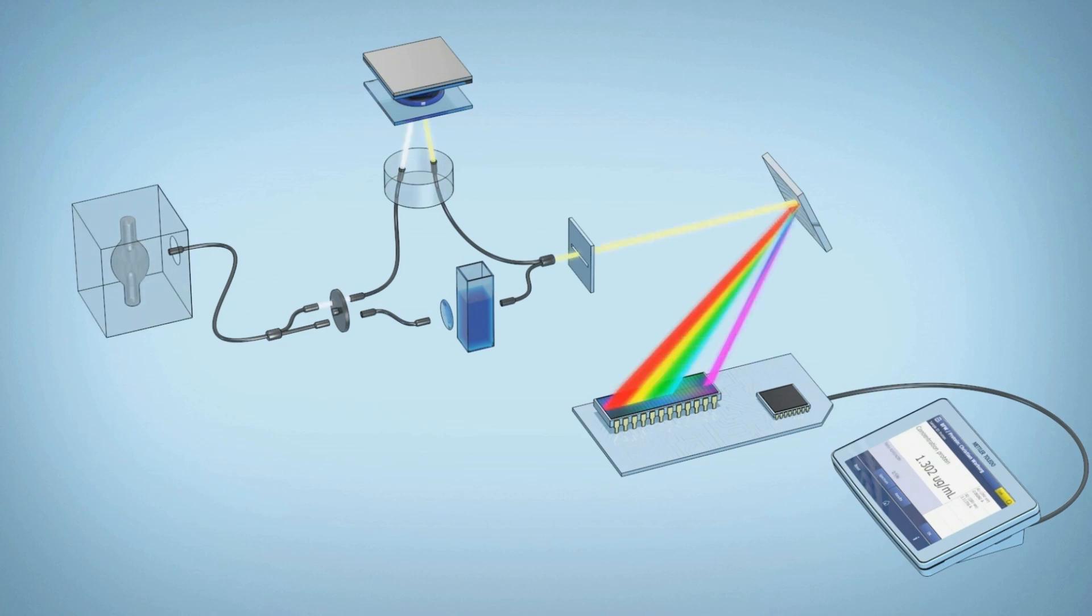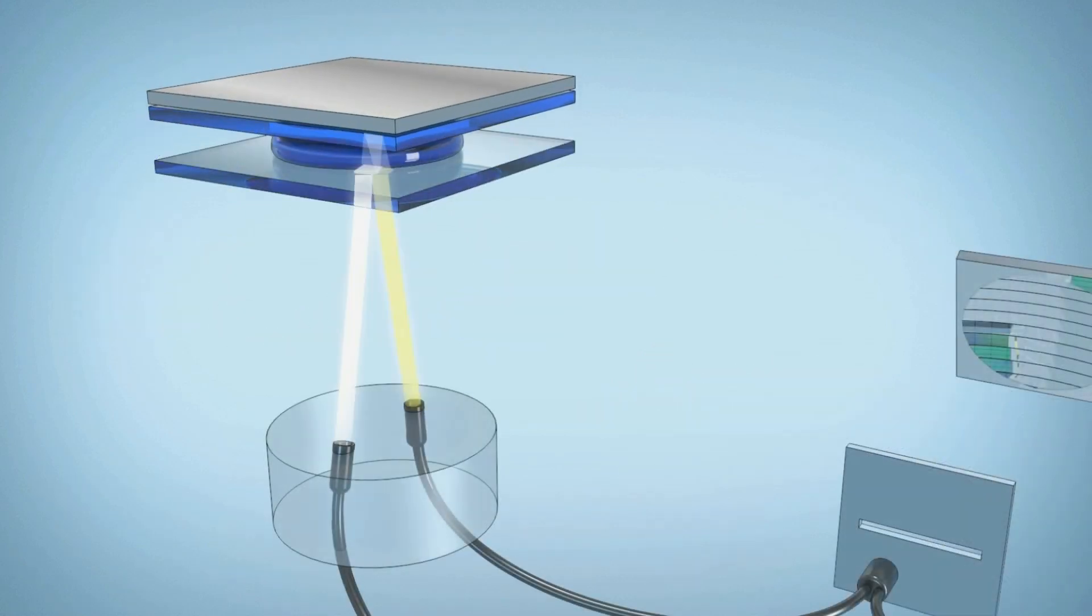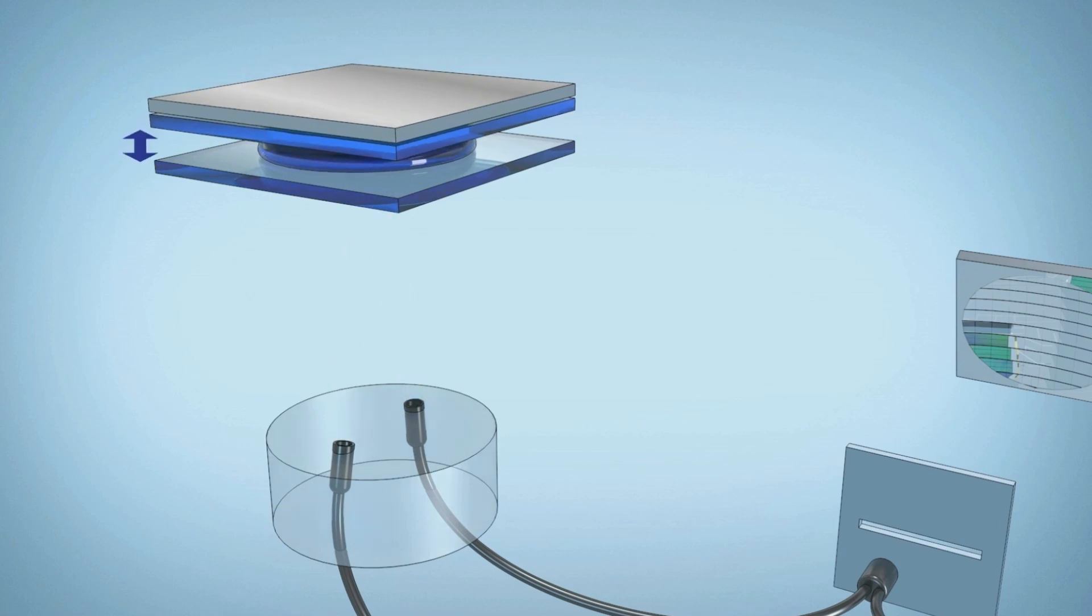This time, the light can go through the cuvette as before, or be diverted to the micro-volume platform, as you can see in this video. Lock path technology within the arm of the UV5 nano allows a fixed path length of either 1mm or 0.1mm to be maintained.